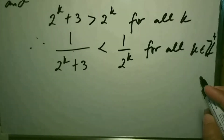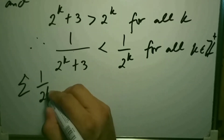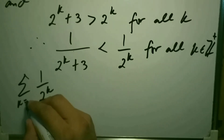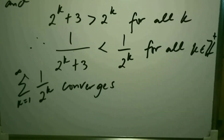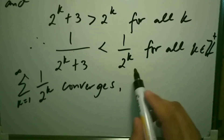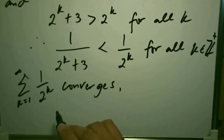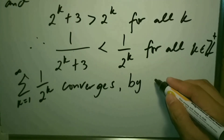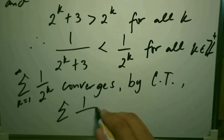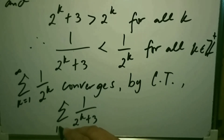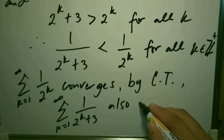Observe that the summation of 1/2^k from k=1 to infinity converges. So if this series converges, by the comparison test, the summation of 1/(2^k + 3) from k=1 to infinity also converges.